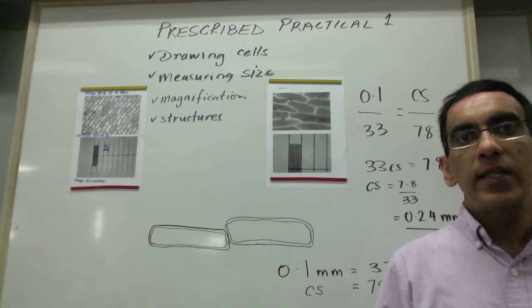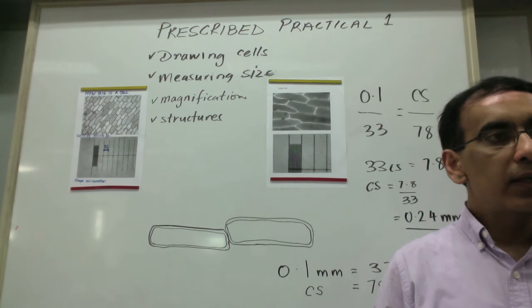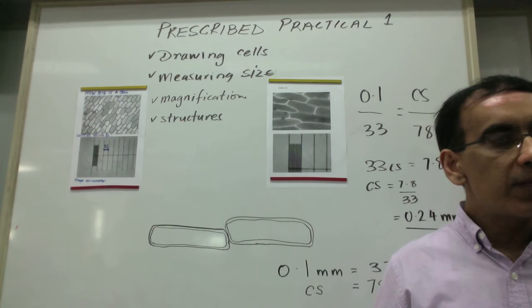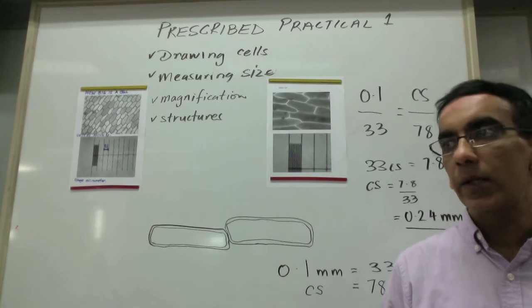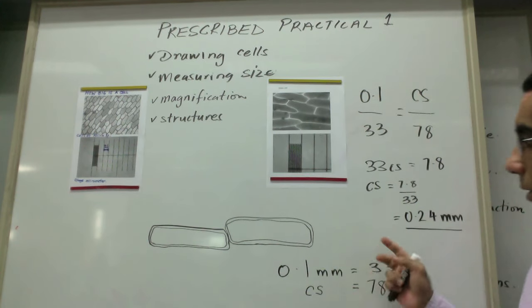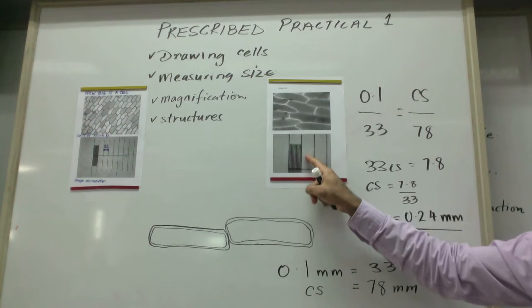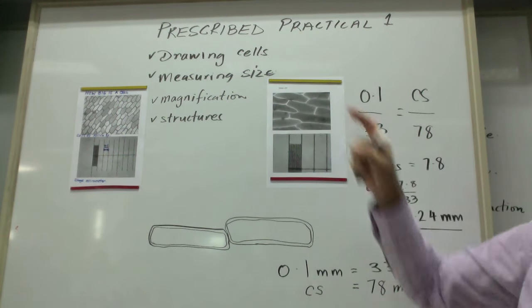And on a calculator, that is the size of this cell: 0.24 millimeters. And if we go search online to find out what is the actual cell size of a red onion cell, you'll find it's going to be reported to be somewhere between 0.2 and 0.4 of a millimeter, so that will support what we've just measured.